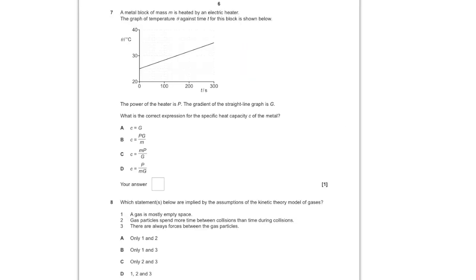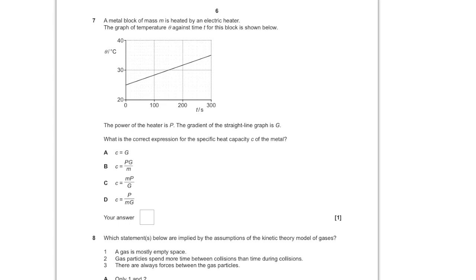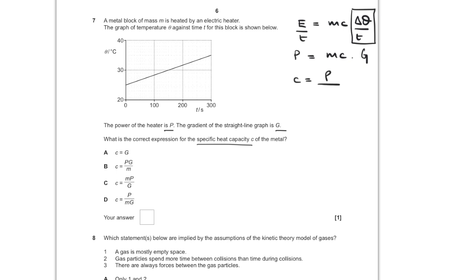For question number seven, a metal block of mass m is heated by an electric heater. The graph of temperature theta against time t is given, with power P and gradient g. We need the expression for specific heat capacity. Using energy equals mc delta theta, and dividing both sides by t to introduce power P, we get P equals mc times the gradient g. So c equals P over mg, and D is the correct option.